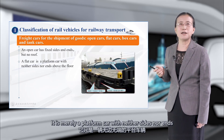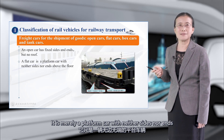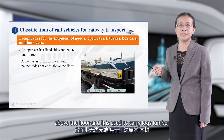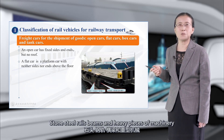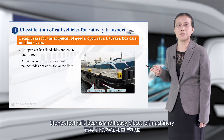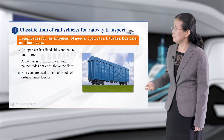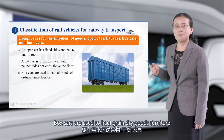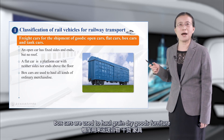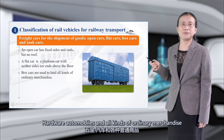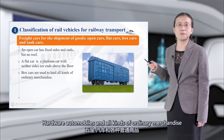A flat car is merely a platform car with neither sides nor ends above the floor, and it is used to carry logs, lumber, stone, steel rails, beams, and heavy pieces of machinery. Box cars are used to haul grain, dry goods, furniture, hardware, automobiles, and all kinds of ordinary merchandise.